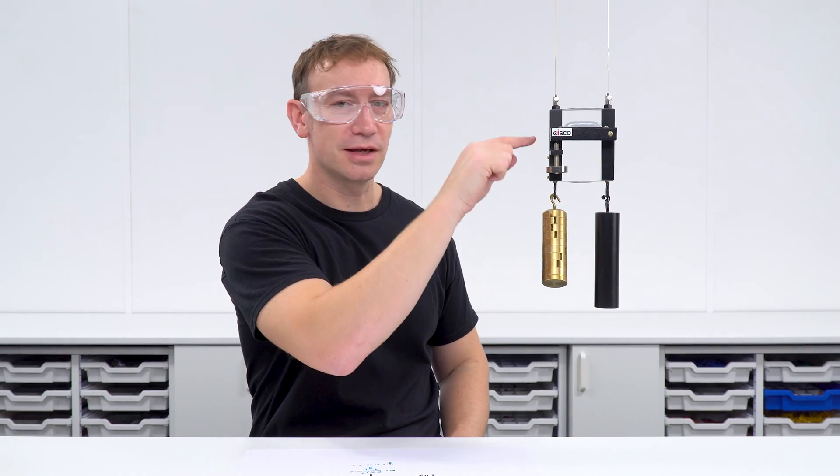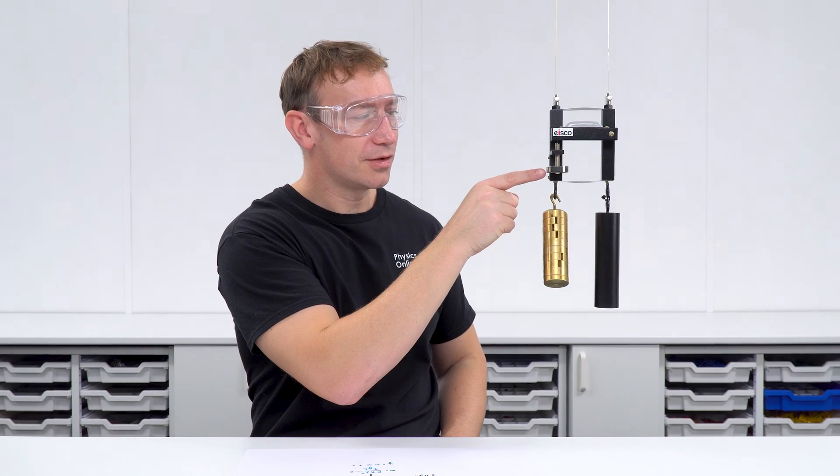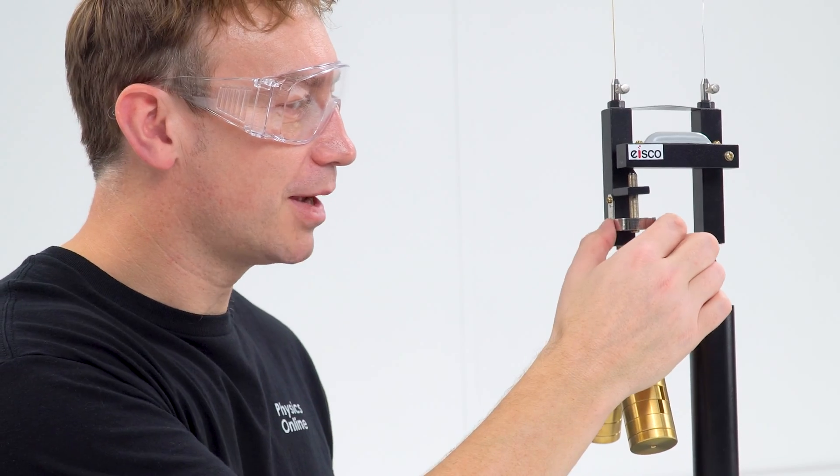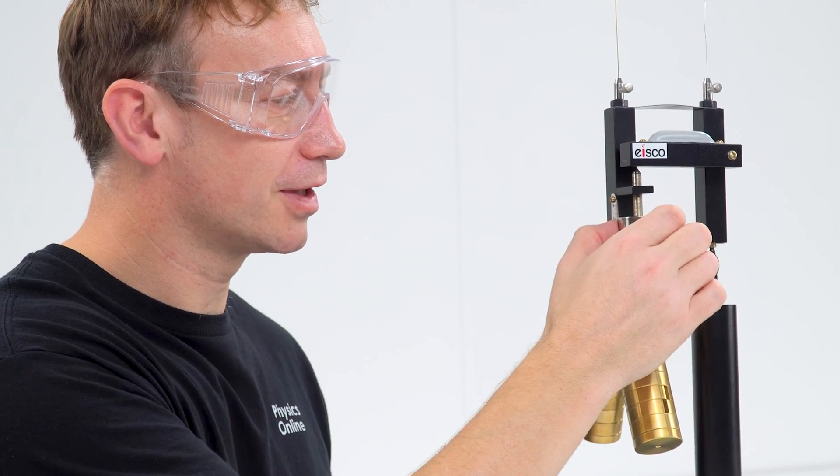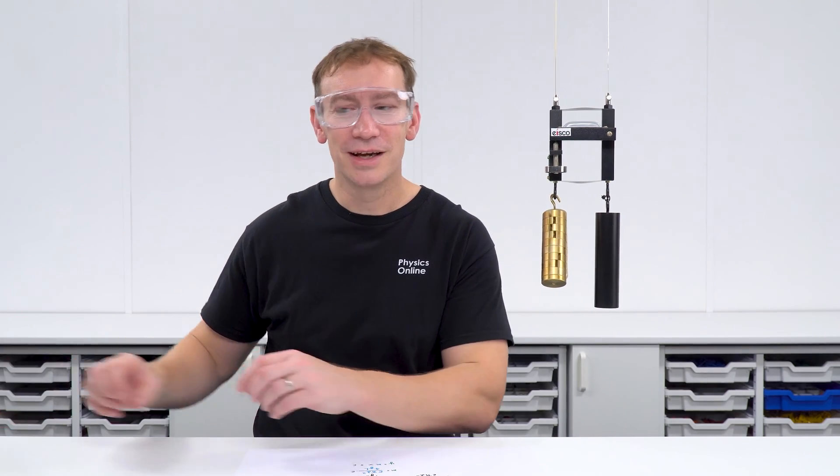And by reading the initial value, noting that down, loading this up, making the change to make that horizontal again, we can see how many markings we've gone through and therefore we can actually measure the extension to the nearest 0.01 of a millimeter so probably about a hundred times better than just looking at the extension next to a ruler.